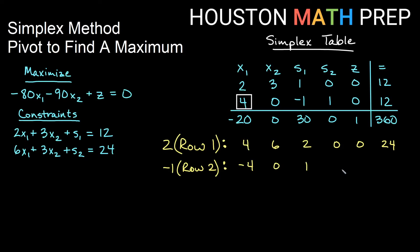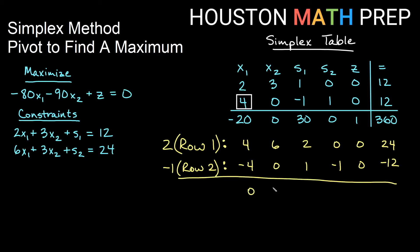Adding those together we get: 0, 6, 3, negative 1, 0, and 12. Remember, we were changing row one, so this is our new row one. We'll drop that in the table as our new row one.